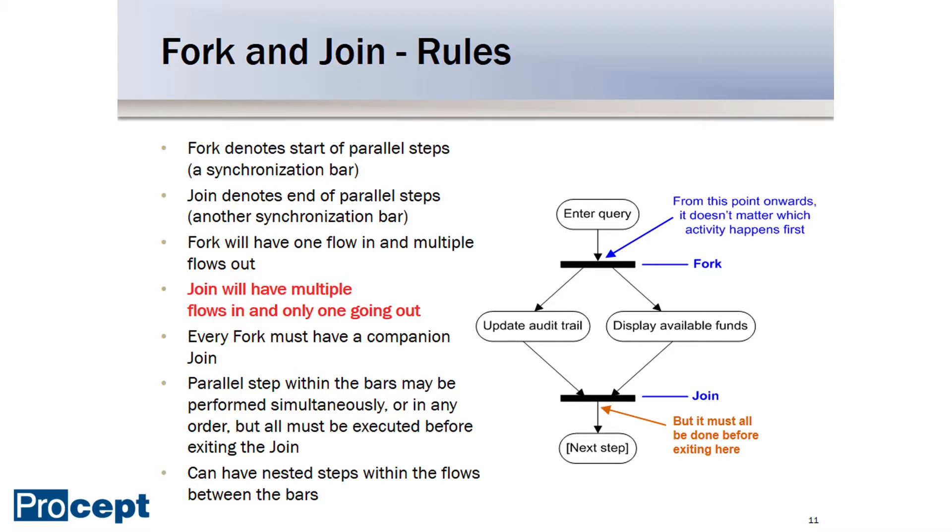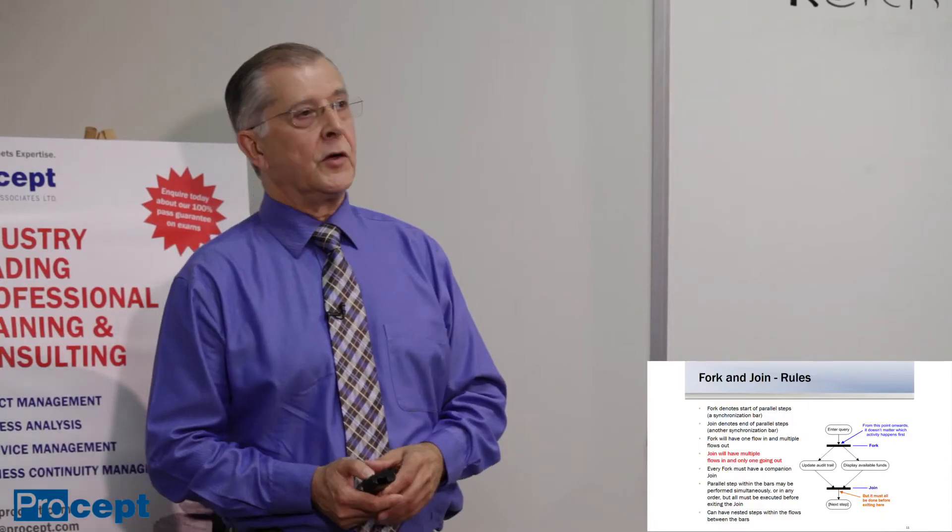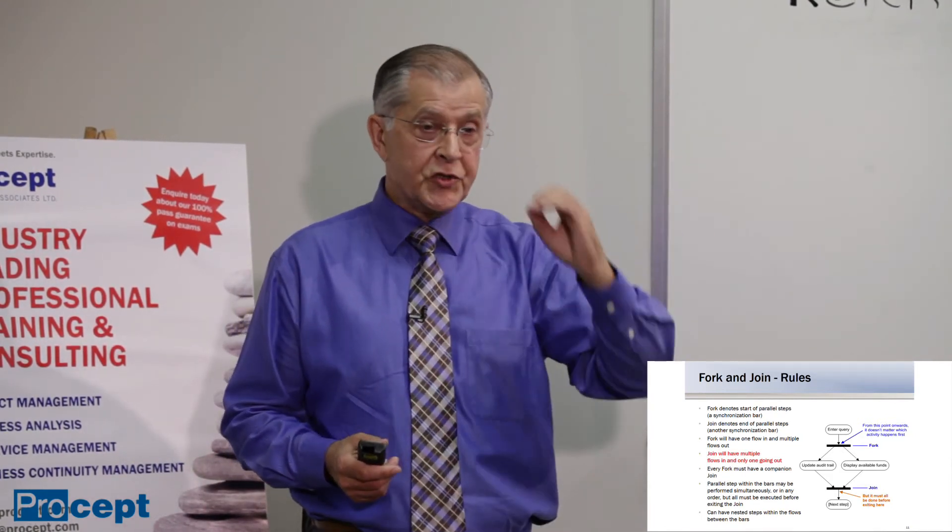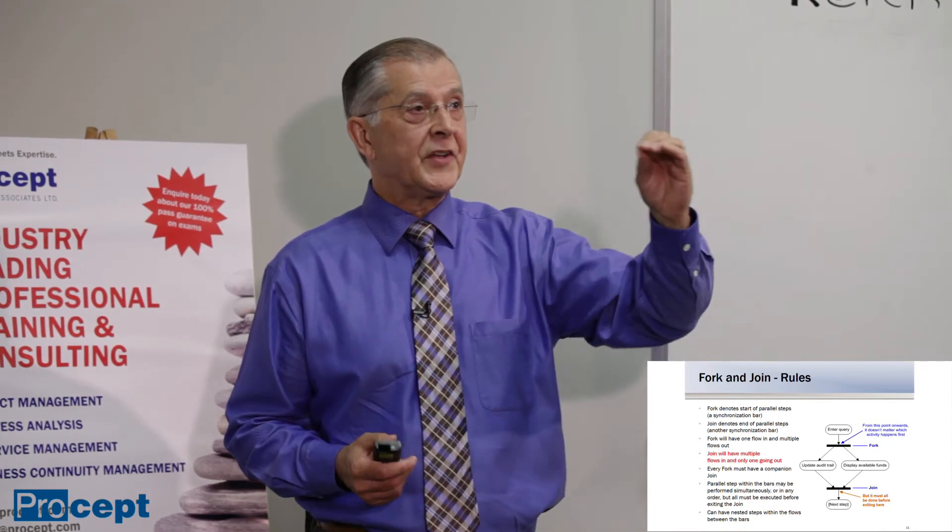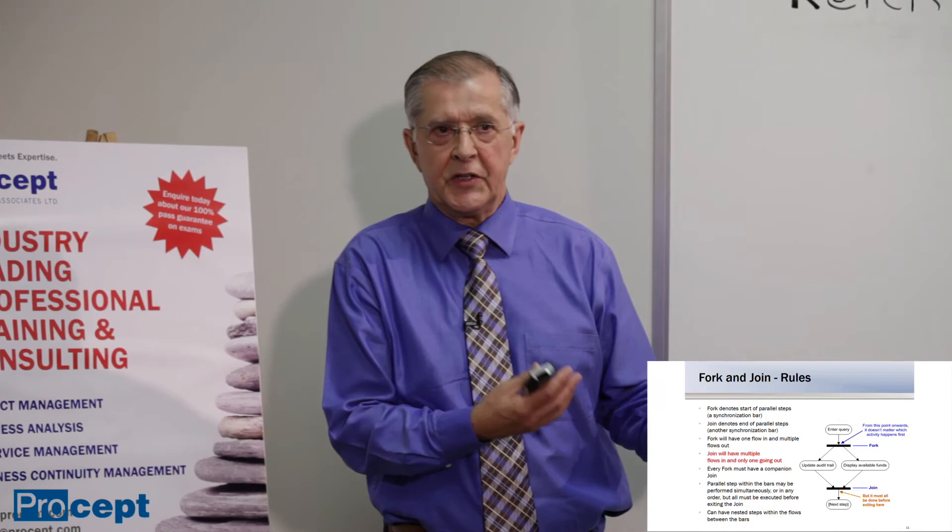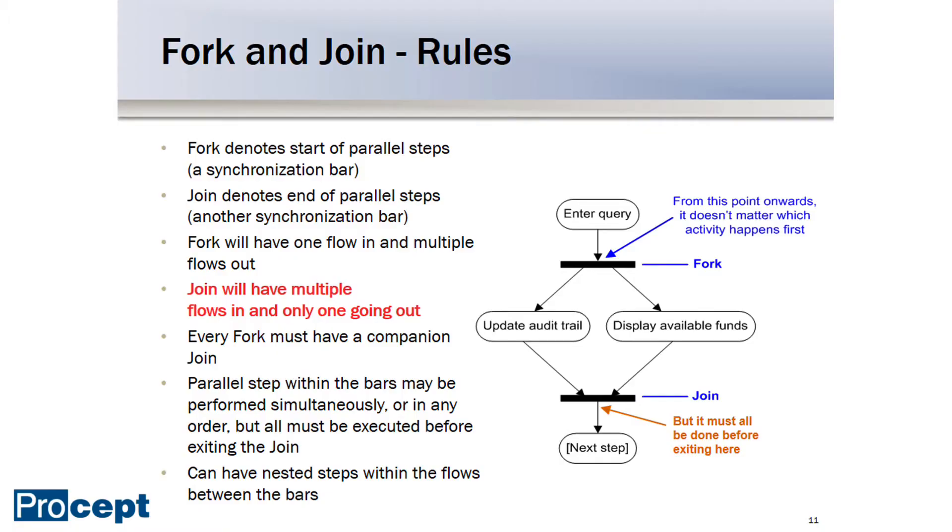The join, that second synchronization bar, has multiple flows inbound to the bar and then one emerging from it. It's important to realize that if the logic doesn't support that second bar bringing the flows back together again, we've got a problem and we need to go back and revisit it because every fork must have a companion join. Otherwise you've got an error in your model.